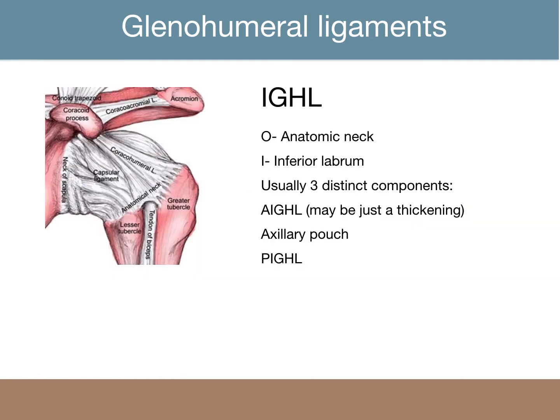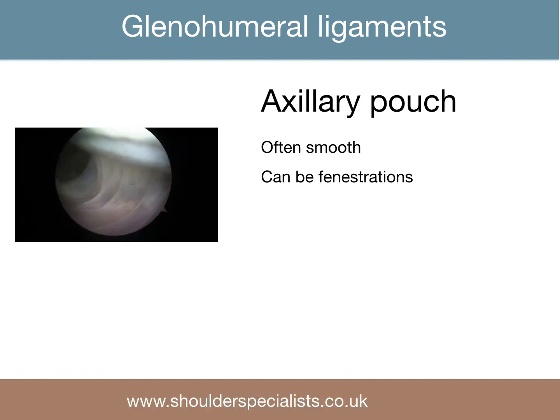The inferior glenohumeral ligament has three components: the anterior and posterior glenohumeral ligaments, which are of variable substance, and the intervening axillary pouch. The pouch may be smooth or fenestrated, but should not be separated from the humeral neck at any point.